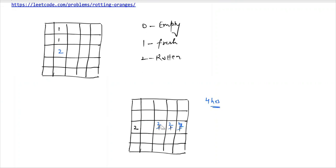In another example, we have a rotten orange in the center with fresh oranges in all four adjacent cells. Because all four cells are neighbors of the rotten orange, after just one hour everything will rot.